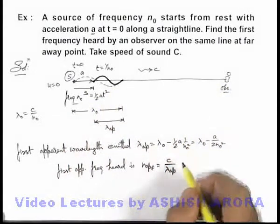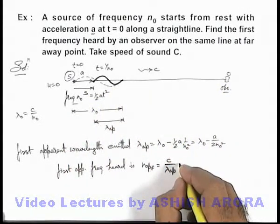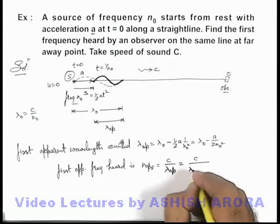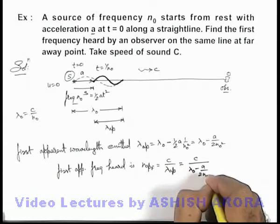After emission from source, so this will be c divided by λ₀ - a/(2n₀²).